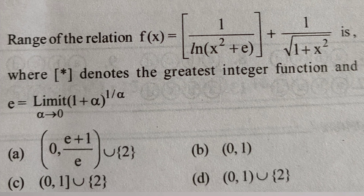In this question we have to find the range of the relation f(x) = ⌊1/ln(x²+e)⌋ + 1/(1+x²)^(1/2), where ⌊⌋ denotes the greatest integer function and e is defined as the limit as alpha tends to 0 of (1+alpha)^(1/alpha).